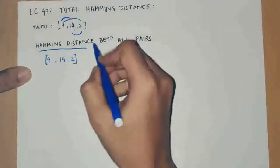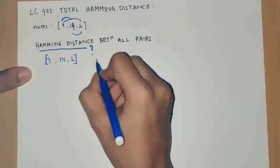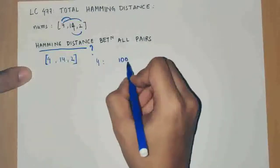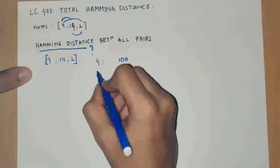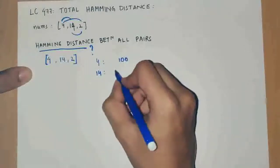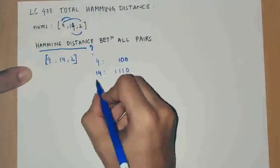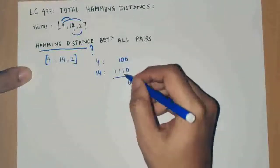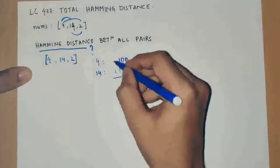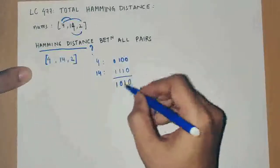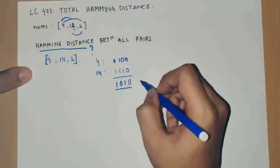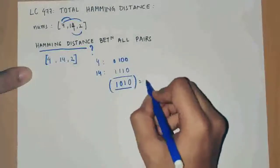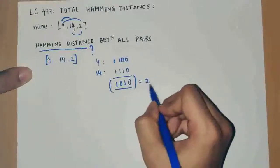So what is hamming distance exactly? Suppose we have two numbers: 4, which in binary representation is 100, and 14, which is 1110. To find the hamming distance we need to find the XOR of these two numbers, which gives us 1010. We then count how many bits are set in this XOR, which is 2. So 2 is the hamming distance.